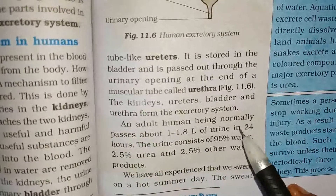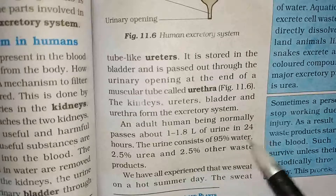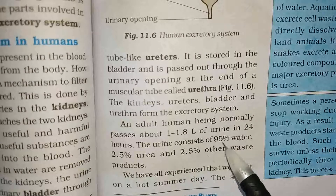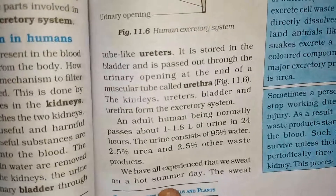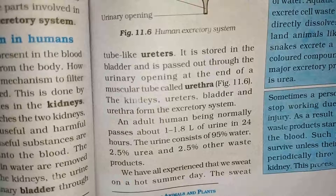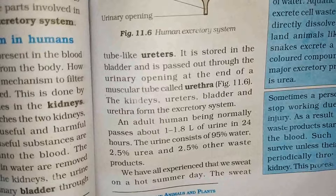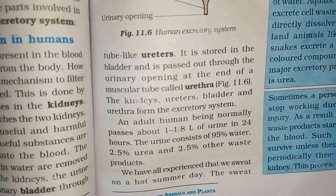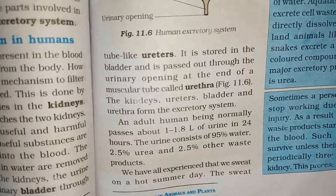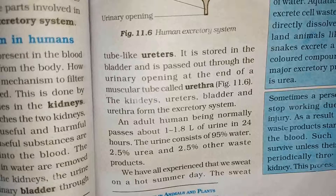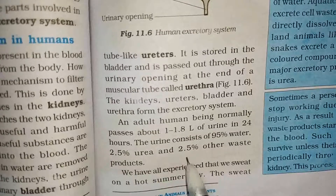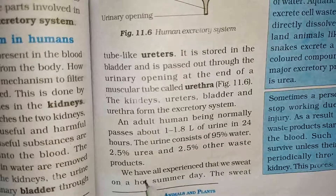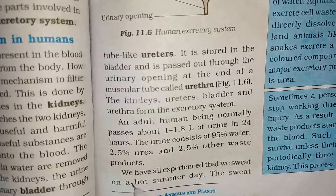An adult human being normally passes 1 to 1.8 litres of urine in 24 hours. The urine consists of 95% water, 2.5% urea, and 2.5% other waste products. Hamari body mein jo normal adult human hai woh 1 to 1.8 litre urine pass karta hai, aur urine mein 95% water hota hai.